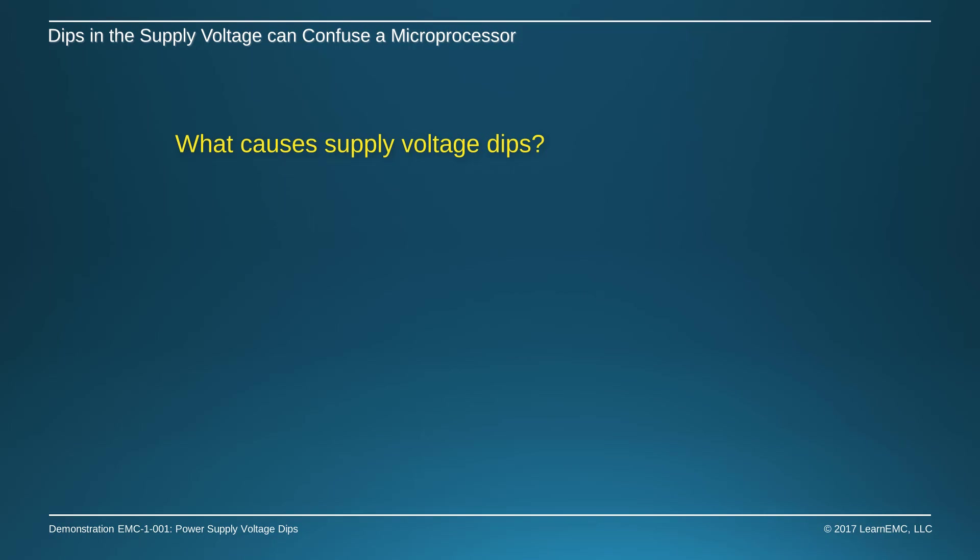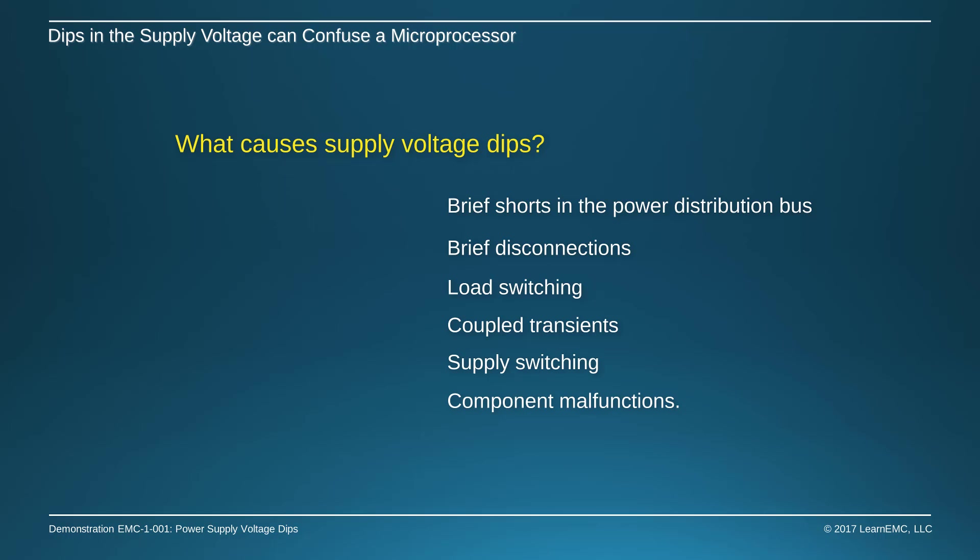Dips in the power supply voltage are essentially unavoidable. They can be caused by brief shorts in the power distribution bus, brief disconnections, load switching, coupled transients, supply switching, and component malfunctions.